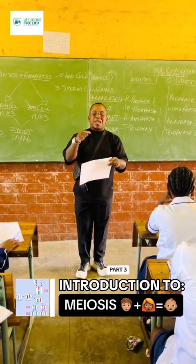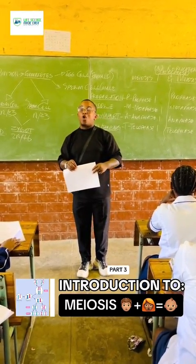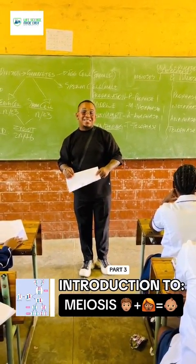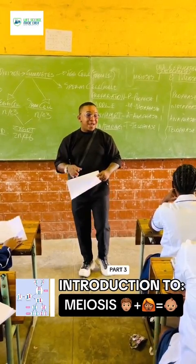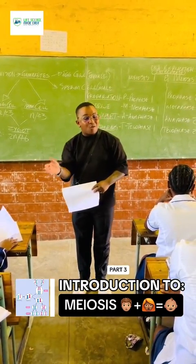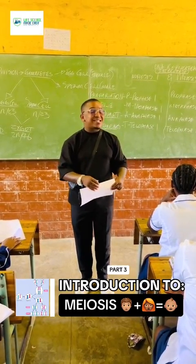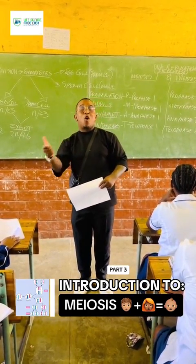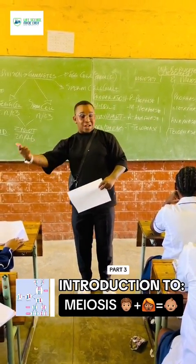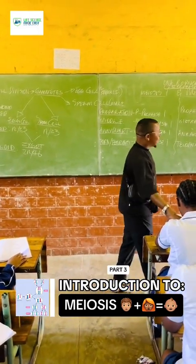In the process, we have a telophase. It is cytokinesis. Cytokinesis means it is splitting off — from one cell into two.